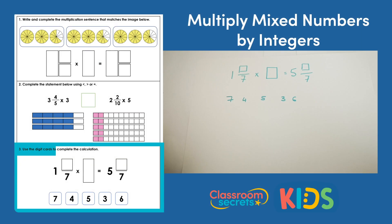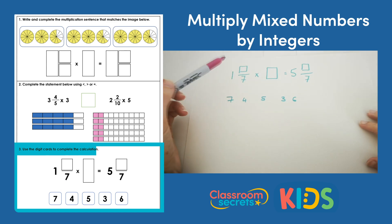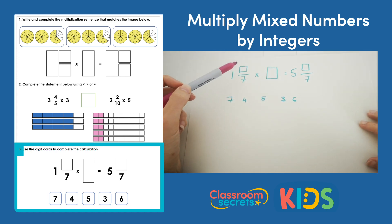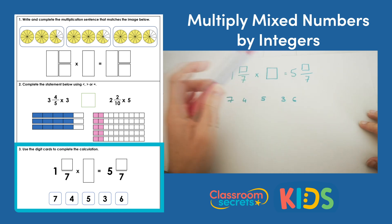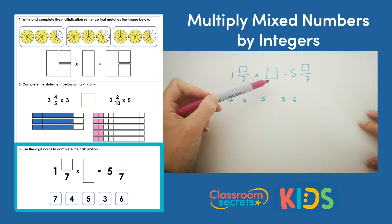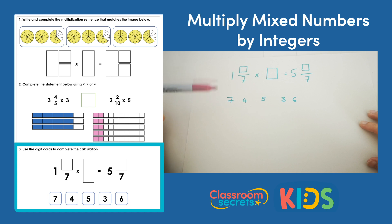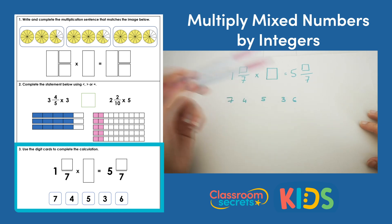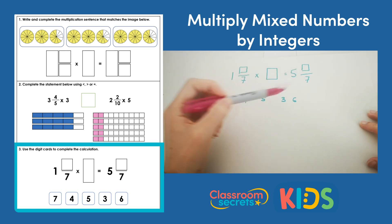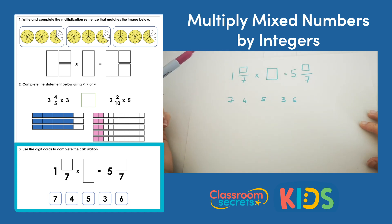Question 3: use the digit cards to complete the calculation. Within the calculation we're missing the numerator for the mixed number, the numerator for the final answer, and the integer we multiply by. We've got the numbers 7, 4, 5, 3 and 6 that we can put in these spaces.